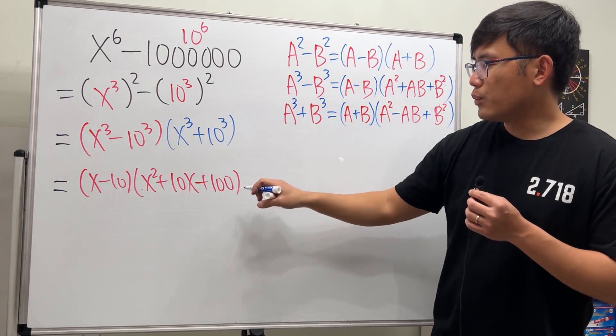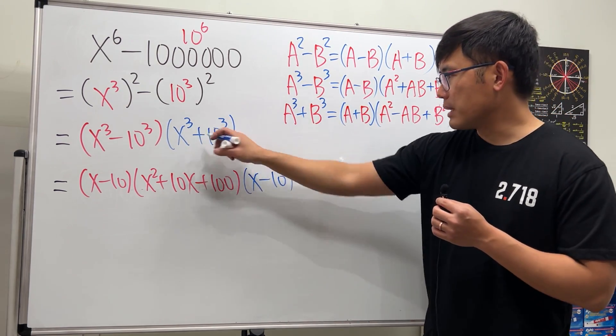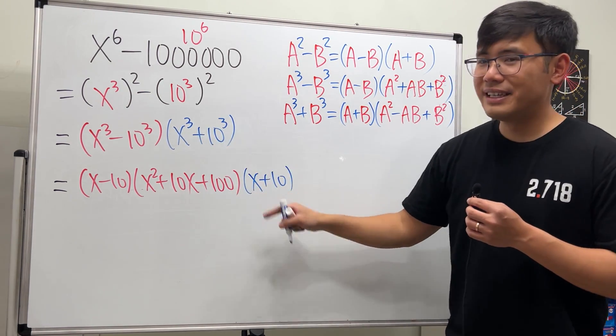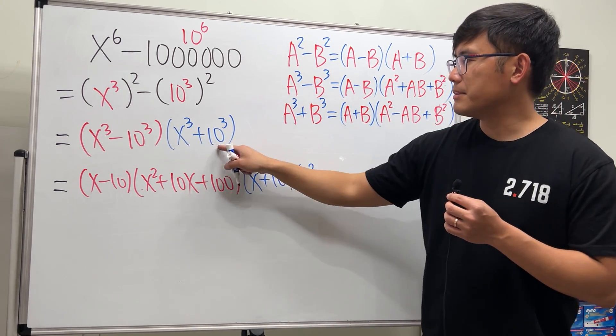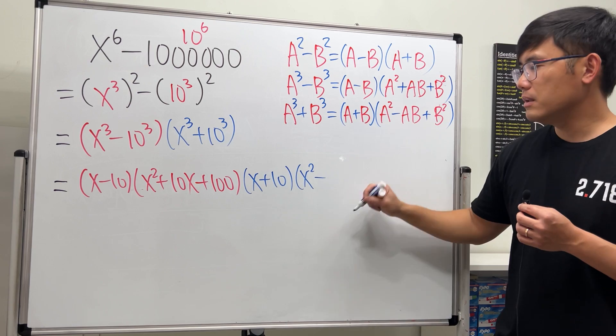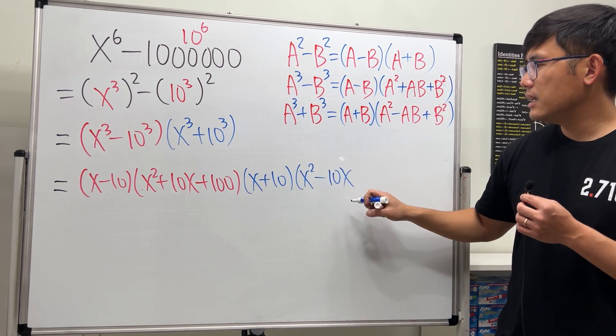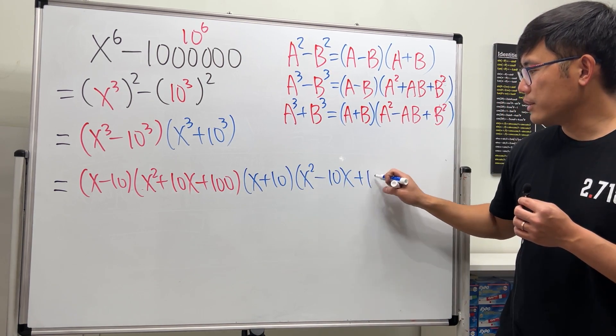And then for the other one, it will be x plus 10, because this is a plus, and then x square minus this times that, because it's a minus ab, so it's minus 10x, and lastly, 10 square, so plus 100.